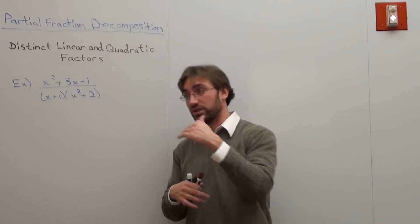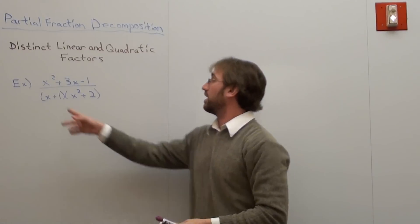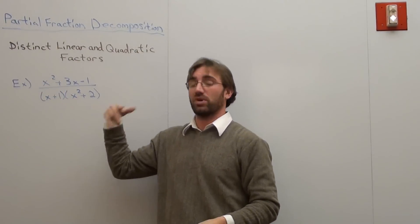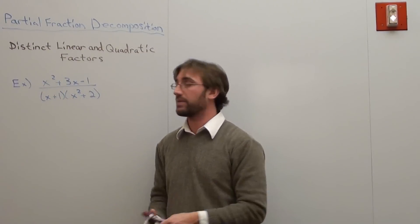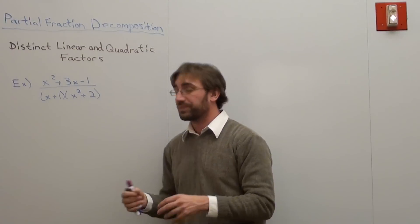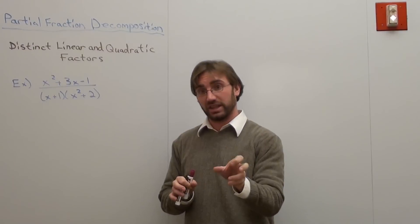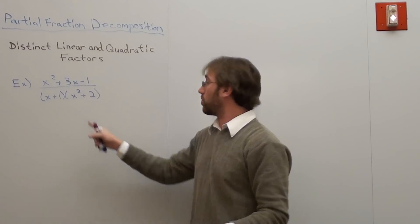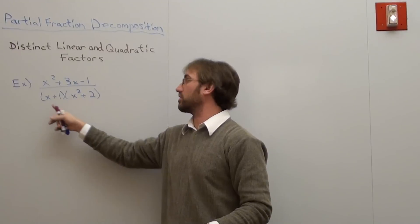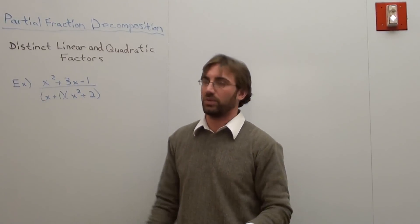You've got to make sure the numerator is of a lower degree than the denominator. That's degree 2, x times x squared is degree 3, so it fits. The reason why I'm doing this one together is so that you can see the difference between a distinct linear factor and a distinct quadratic factor. This one's quadratic because it's got an x squared. This one's linear because it's degree 1.